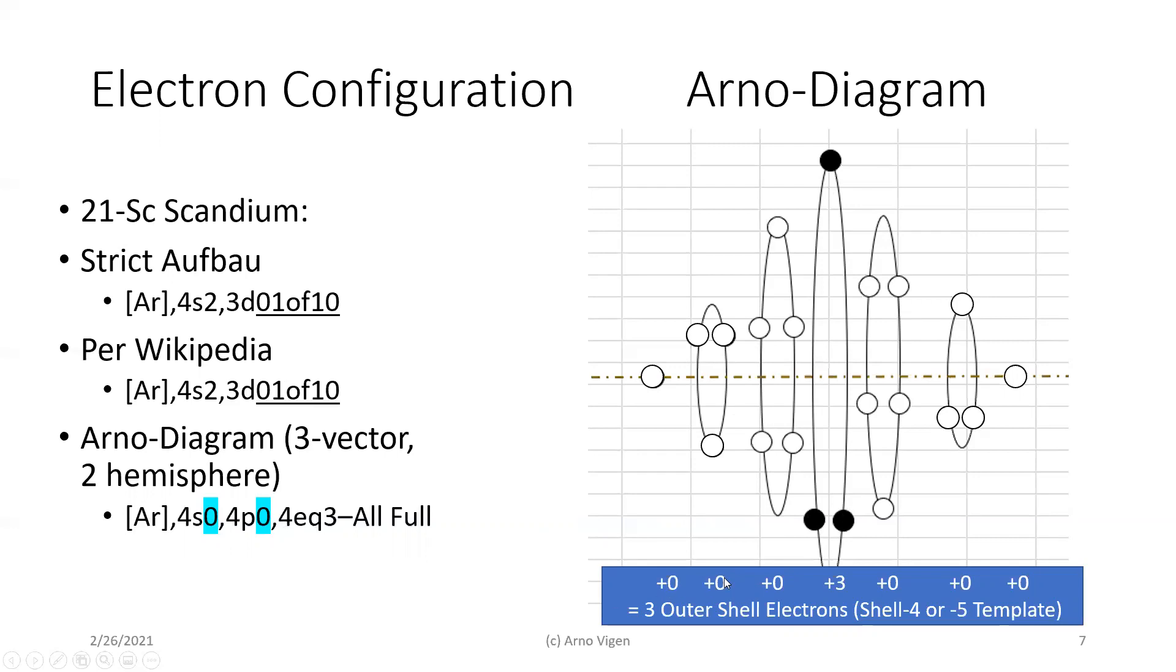Again, that means that you have zero, plus zero, plus zero, plus three, zero, zero, zero in the other hemisphere. So the three outer subshells, all full, all using full subshells, using the Arno diagram for the shell four and five template. Understand it's different depending on which layer you're in.